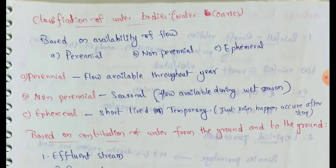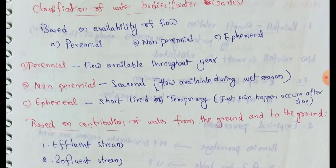Non-perennial streams are seasonal streams. The stream may remain dry for some months — it is a seasonal stream. The stream may not have groundwater recharge, so it has limited contribution from groundwater. Water flow is available only during wet seasons. So these are non-perennial streams or rivers.